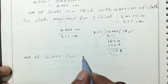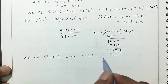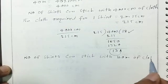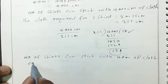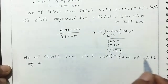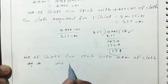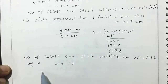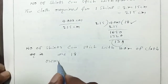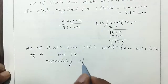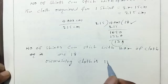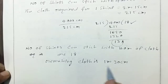Number of shirts that can be stitched with 40 meters of cloth is 18. The remaining cloth after stitching 18 shirts is 4,000 − (18 × 215) = 130 cm, which equals 1 meter 30 centimeters.